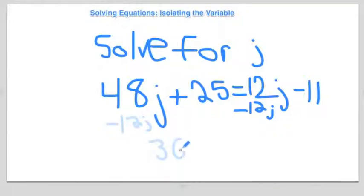And then you're going to subtract 25 on both sides, so you get 36j equals negative 36.